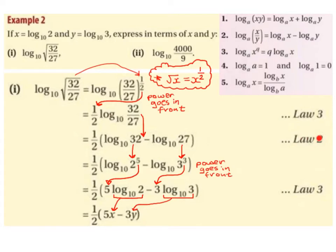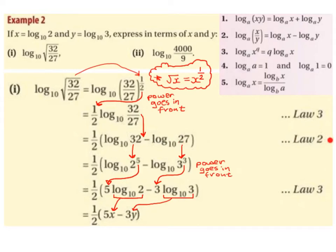We're using Law 2 of our log laws: log base a of (x/y) equals log base a of x minus log base a of y. It is important with our dividing and subtraction rule that the numerator comes first and the denominator comes second. So log base 10 of 32/27 became log base 10 of 32 minus log base 10 of 27, with the half still in front.